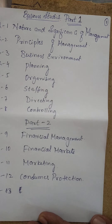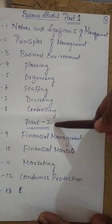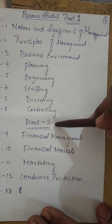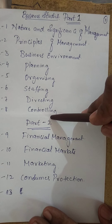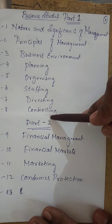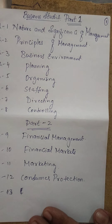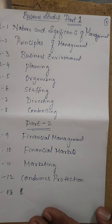In business studies we have two parts: Part One has chapters one to eight, and Part Two has four chapters. Let us see what those chapters are.